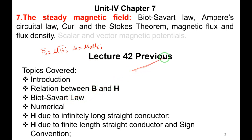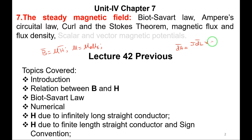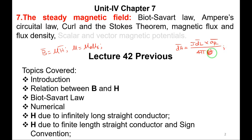Then we covered Biot-Savart law. The differential magnetic field intensity dH is given by the current element idl cross the unit vector directed from source point to field point, divided by 4πr². This distance r is measured from source point to field point.